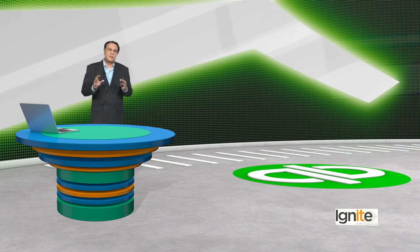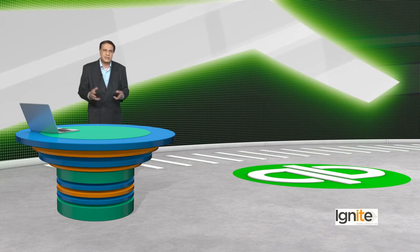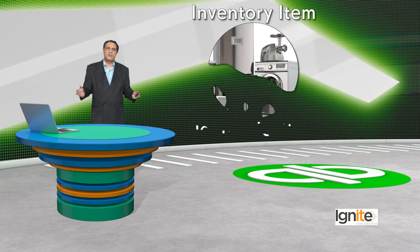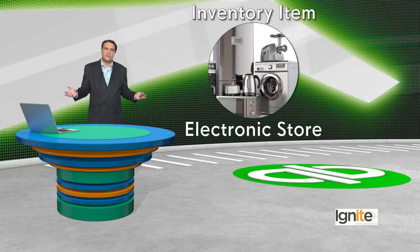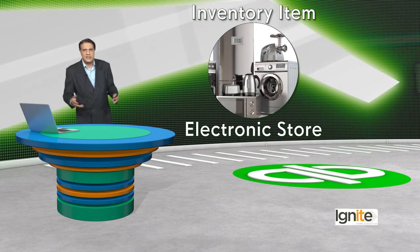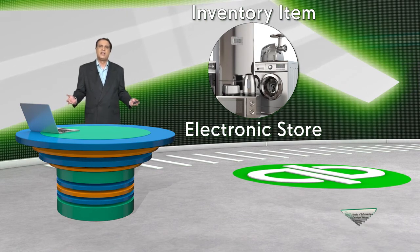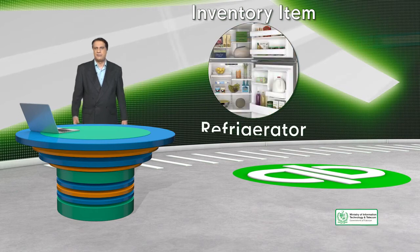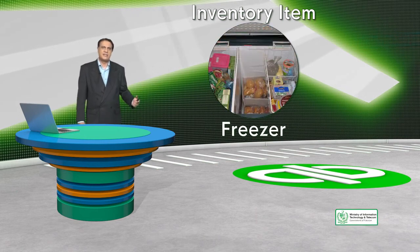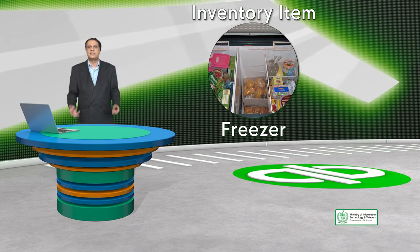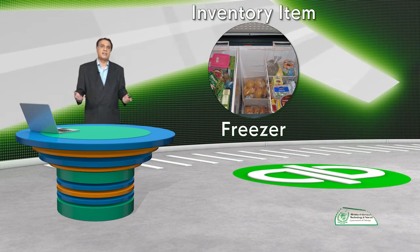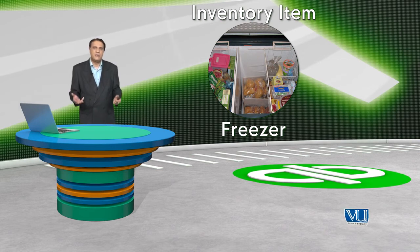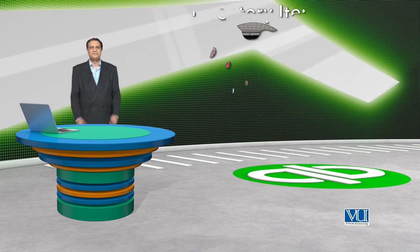Let's take a small example of inventory items. If we have an electronic store, then all the items inside — LCDs, refrigerators, freezers, or any electronic item we buy — are all our inventory items. They are our assets, and that is basically our inventory item.